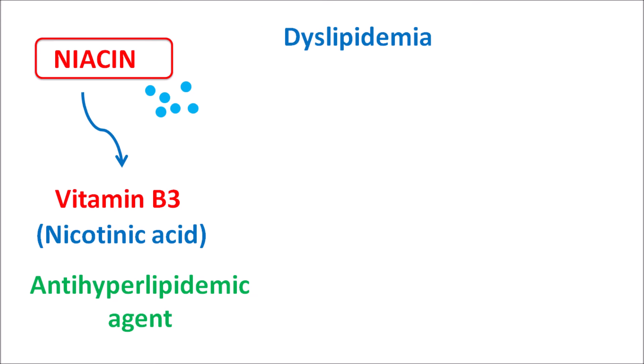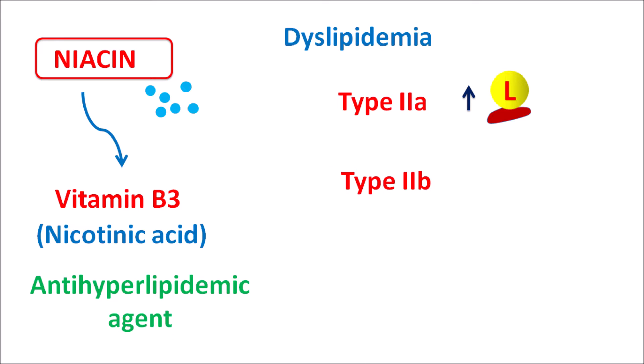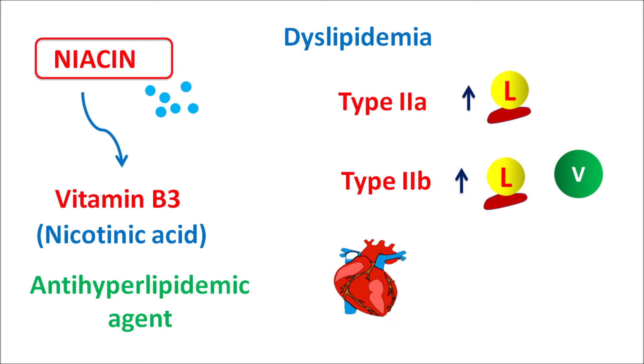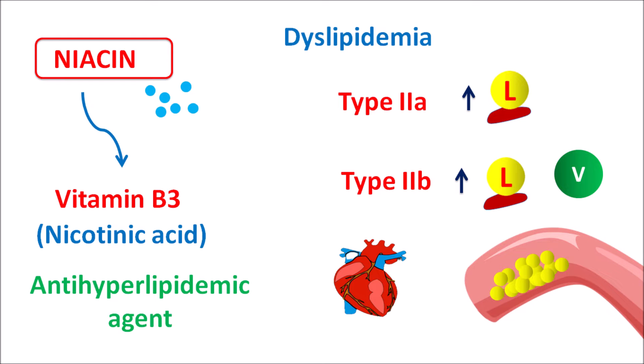Niacin can be used in the treatment of dyslipidemia — particularly type 2a dyslipidemia, which is associated with elevated LDL cholesterol, and type 2b dyslipidemia, associated with elevated levels of both LDL and VLDL cholesterol. Since niacin reduces both LDL and triglyceride levels, it can be used in type 2b dyslipidemia. It also reduces the risk of myocardial infarction and stroke, and can be combined with statins to reduce atherosclerosis risk.